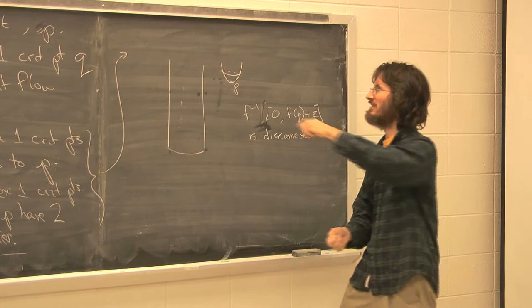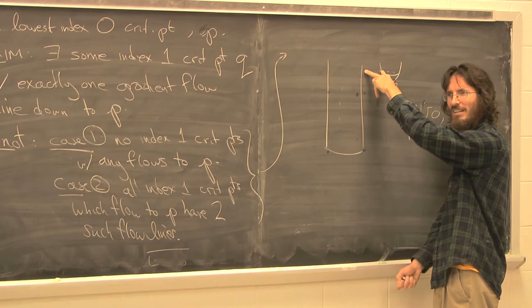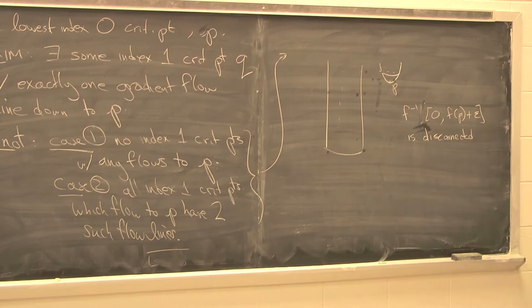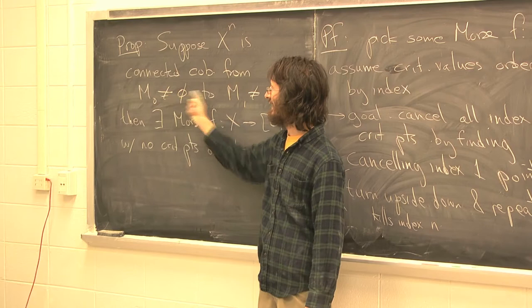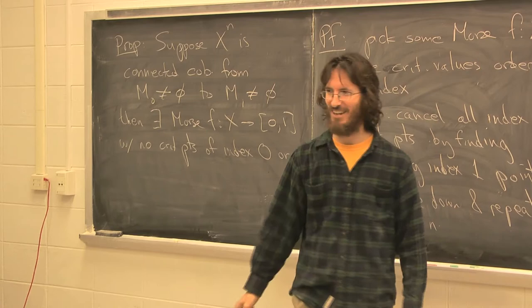Exactly — index-1 kills pi-0 and generates pi-1. Index-2 kills pi-1 and generates pi-2, et cetera. In fact, there ought to be a generalization of this theorem: if X is simply connected and the level sets are connected, can you do it without index 0, 1, n-1, or n? But those generalizations get much tougher — pi-1 is way more complicated than pi-0, especially in high dimensions.